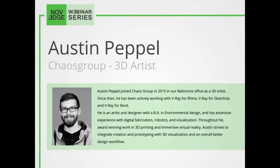Today's presenter, Austin, joined Chaos Group in 2015 in the Baltimore office as a 3D artist. Austin has a BA in environmental design and has extensive experience with digital fabrication, robotics, and visualization. Austin strives to integrate creation and prototyping with 3D visualization and overall better design workflow.